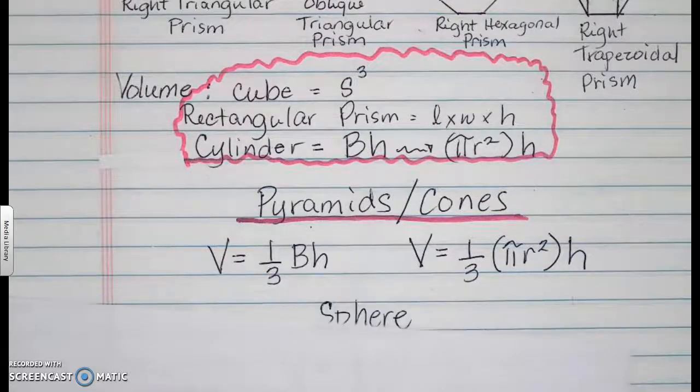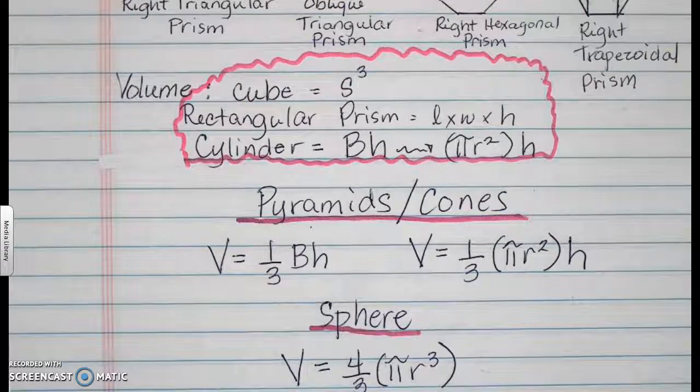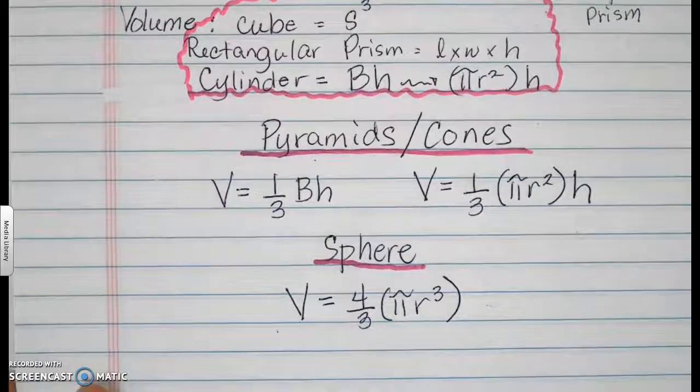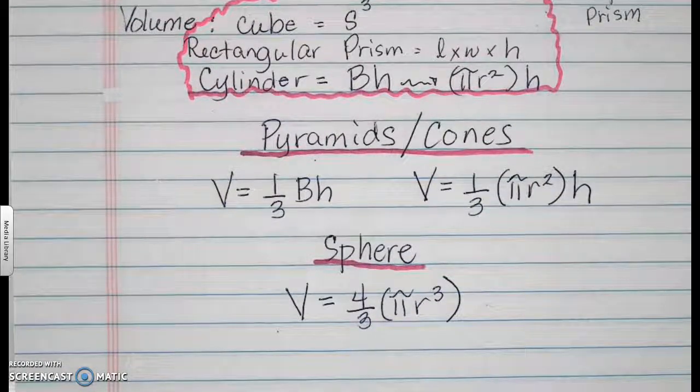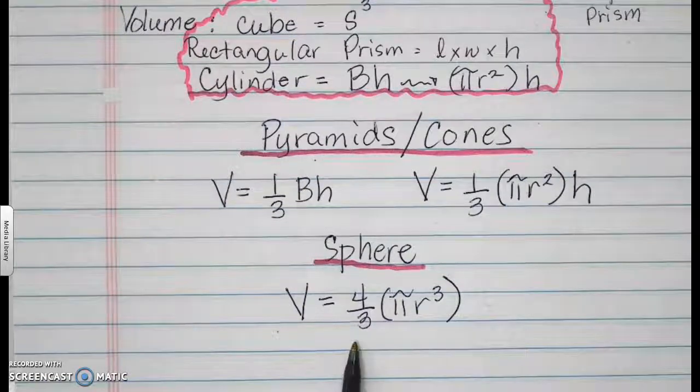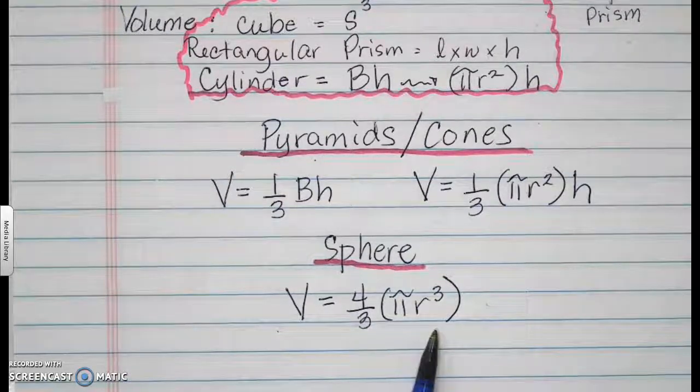The next solid that we have is a sphere. Formula for the volume of a sphere is given as 4 over 3 times pi r to the third.